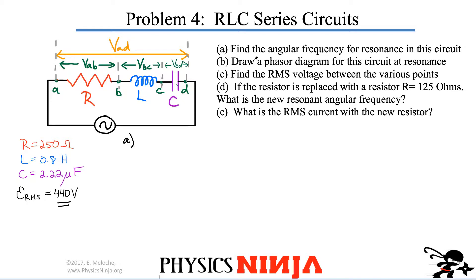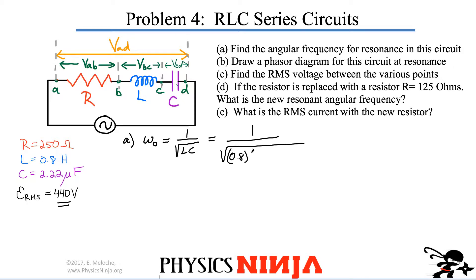Question A says: what is the angular frequency for resonance in this circuit? That's our omega-0 value. Omega-0 is related to our inductor and capacitance — just plug and chug. 0.8 multiplied by 2.22 times 10 to the minus 6. Plug in all the numbers and you get 750 radians per second.